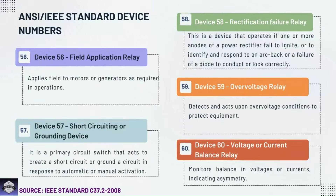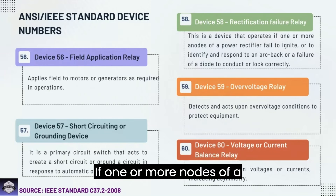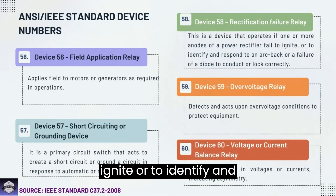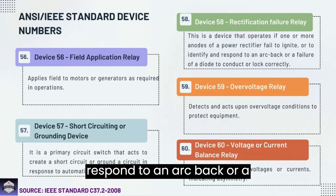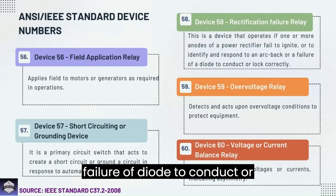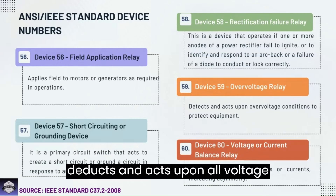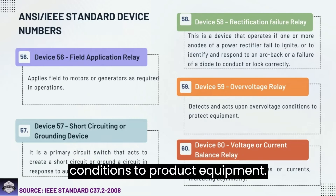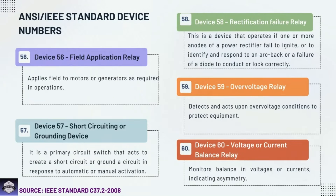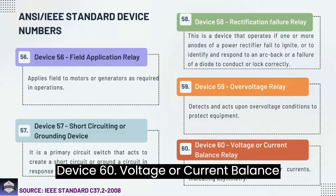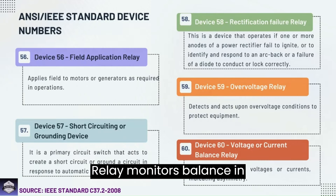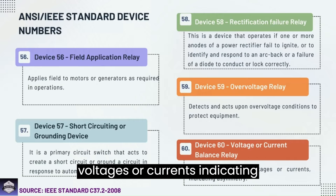Device 58: Rectifier failure relay — a device that operates if one or more anodes of a power rectifier fail to ignite, or to identify and respond to an arc-back or a failure of a diode to conduct or block correctly. Device 59: Overvoltage relay — detects and acts upon overvoltage conditions to protect equipment. Device 60: Voltage or current balance relay — monitors balancing voltages or currents, indicating asymmetry.